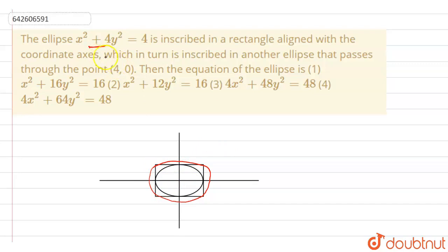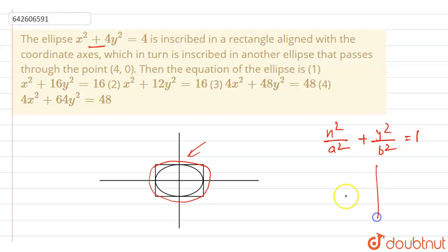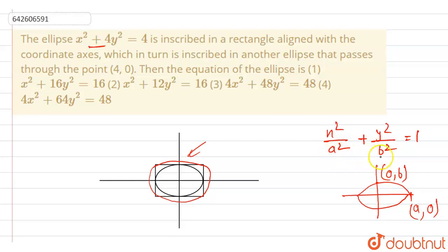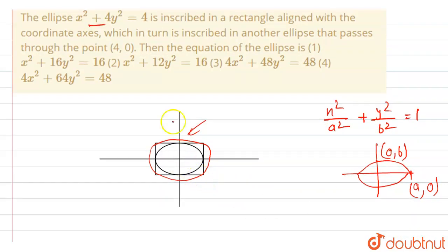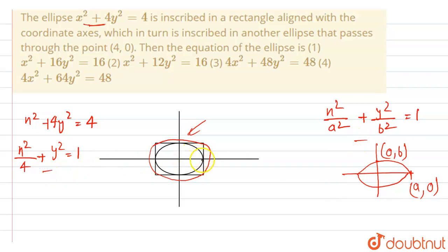We have been given the inner equation of this ellipse and we have to find the equation of the outer ellipse — the red one. Note that the equation of an ellipse can be given by x²/a² + y²/b² = 1, where a and b are the semi-axes. The given equation is x² + 4y² = 4. Dividing by 4, we get x²/4 + y² = 1. Comparing, a = 2, so the point is 2 comma 0.